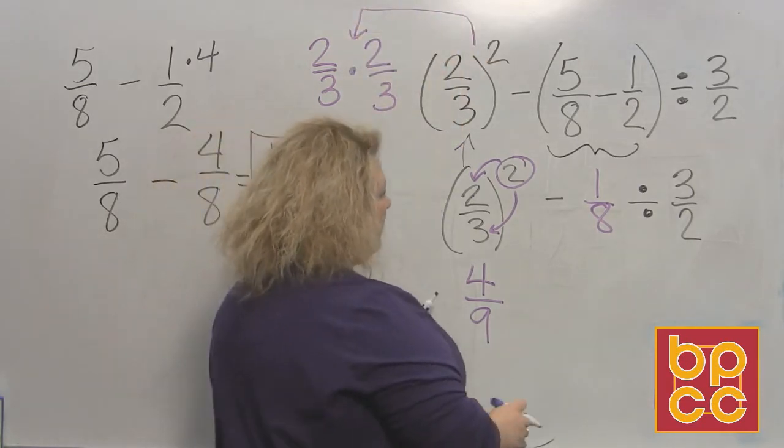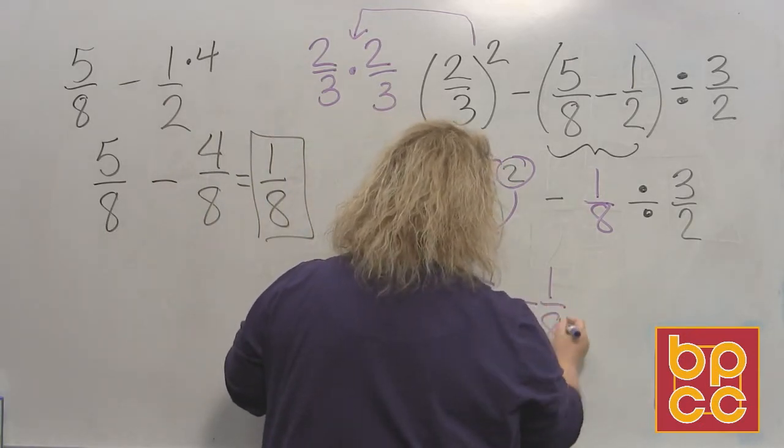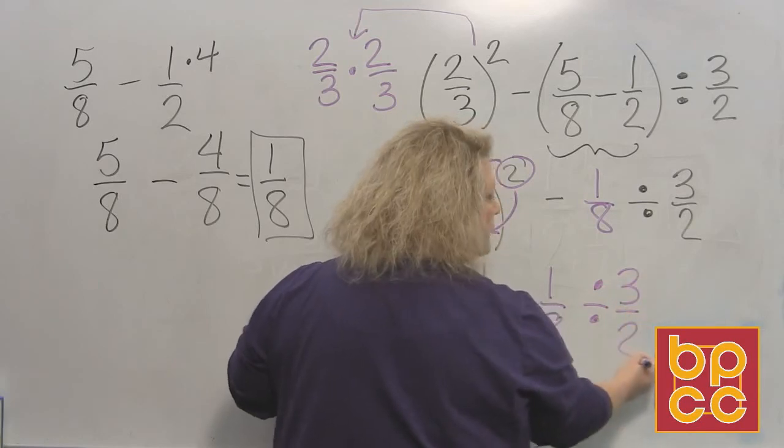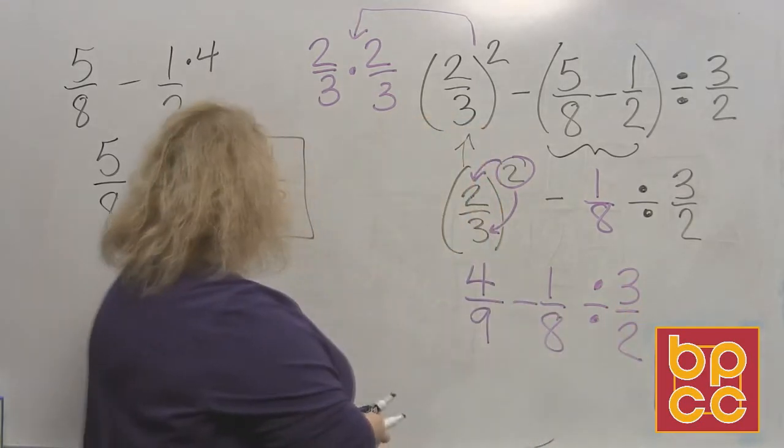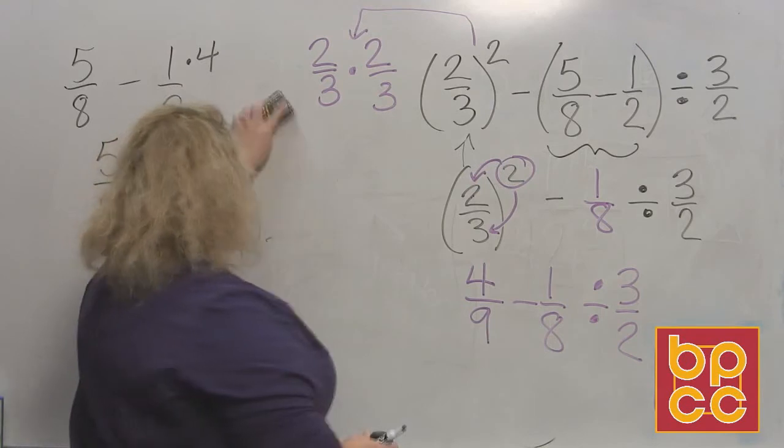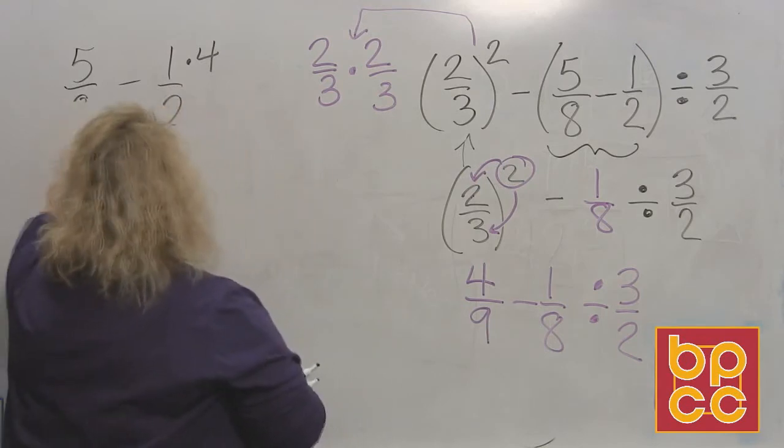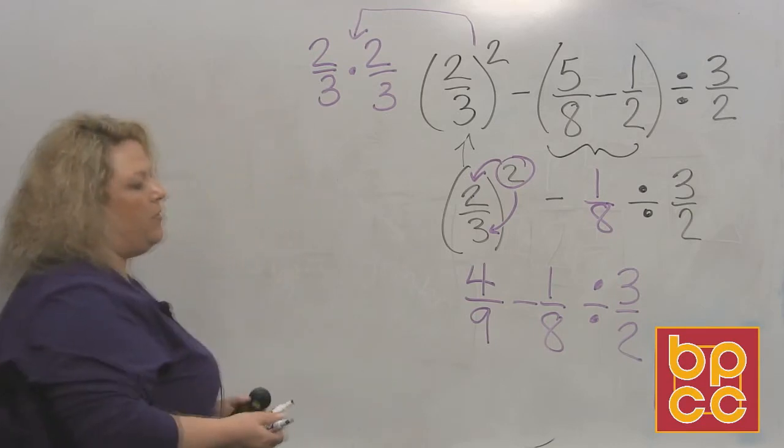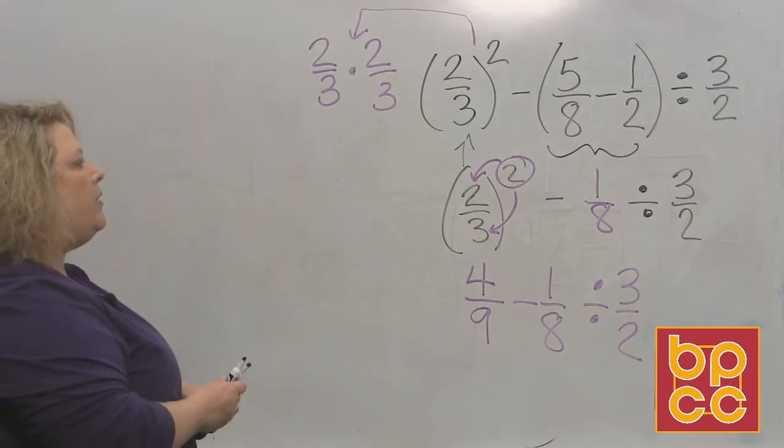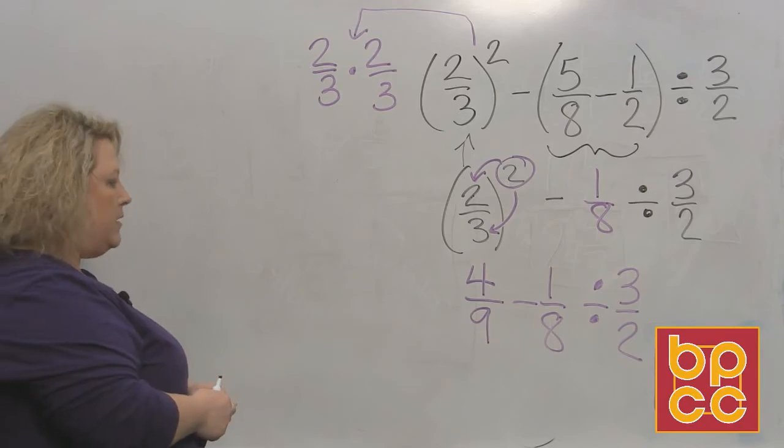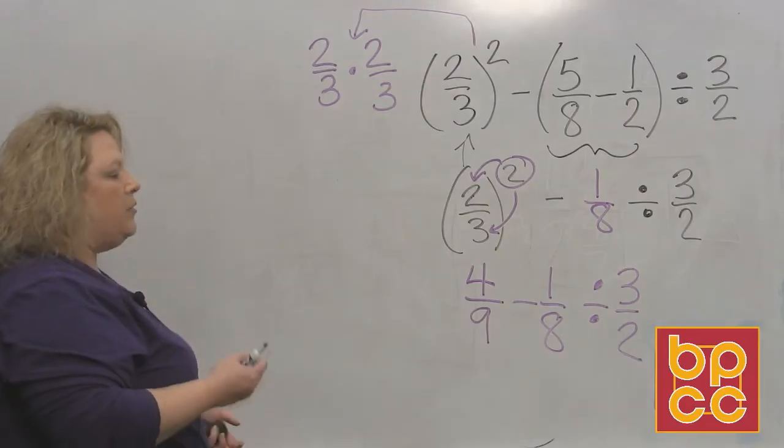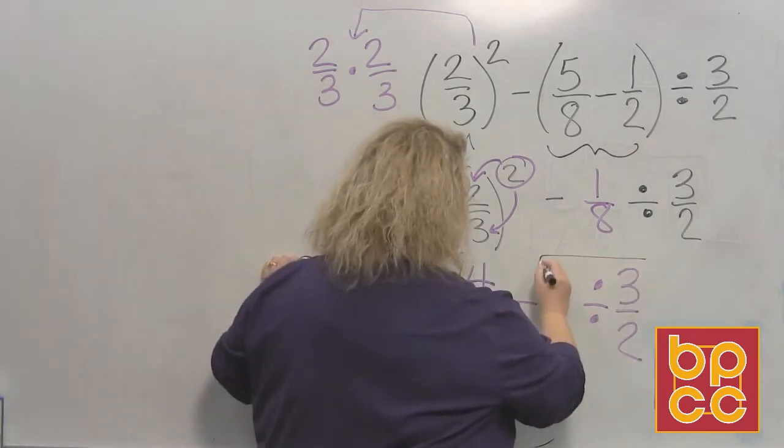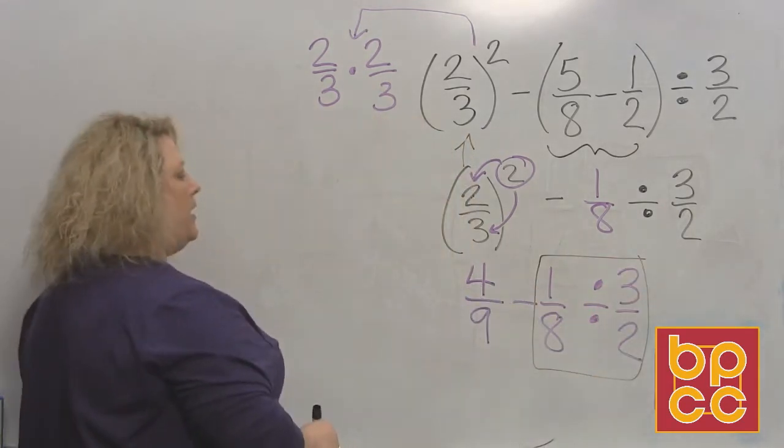Now I have four-ninths minus one-eighth divided by three-halves. The next thing that I want to do, I'm going to erase my scratch work over here. The next thing that I want to do is remember the rest of the order of operations. Once you get rid of parentheses, once you get rid of exponents, the next thing you want to do is multiplication and division from left to right. So I see division in my problem, so I'm going to work that out next.